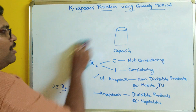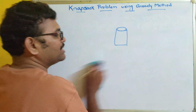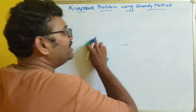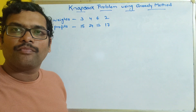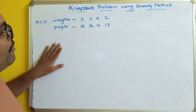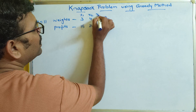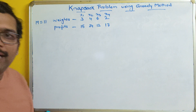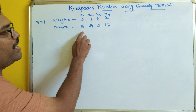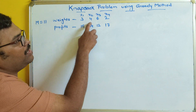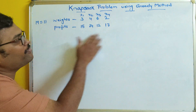Let us check with an example how we can solve this. Whatever we learned in zero-one knapsack is completely different. This is mainly for divisible products. So here, consider this example: it has four weights — x1, x2, x3, and x4. The corresponding profits are: moving 3 kg gives a profit of 15, moving 4 kg gives a profit of 24, moving 6 kg gives a profit of 12, and moving 2 kg gives a profit of 17. Consider weights in kg and profits in rupees.